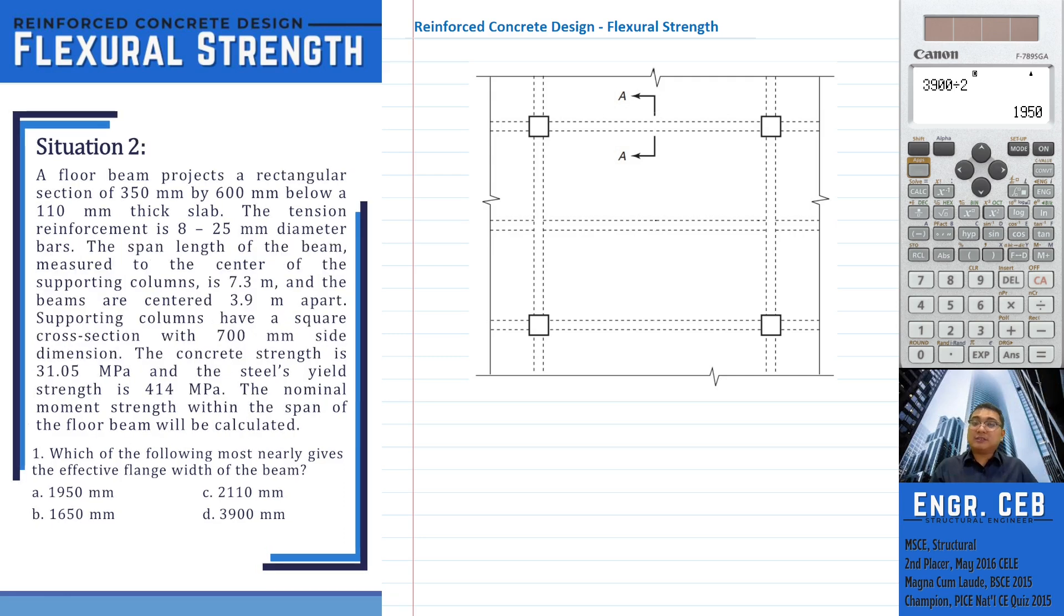In floor systems, T-section can be used to determine the nominal moment strength at the mid-span section of the beam. If we pass a cutting plane through somewhere between the mid-span of the beam, we can see the equivalent T-section. The flange of the T-section represents the portion of the slab, and then the web portion of the T-section represents the rectangular projection of the beam.